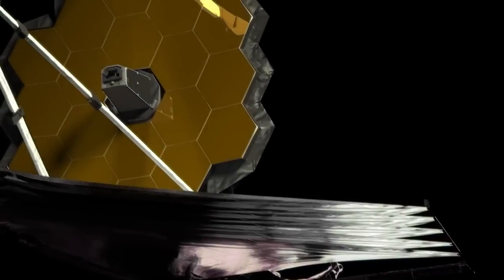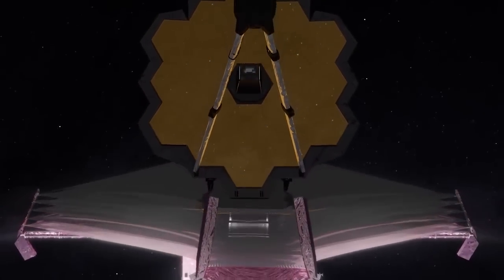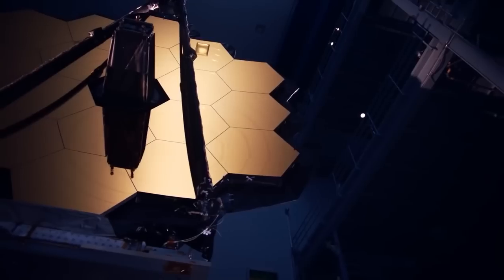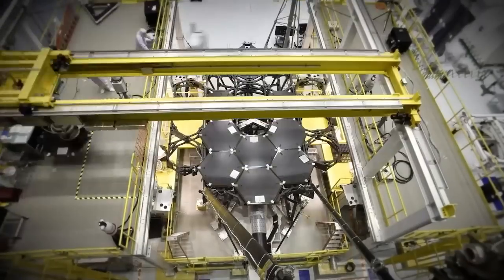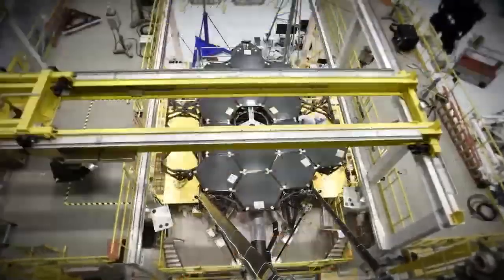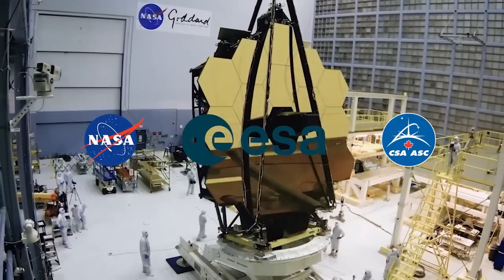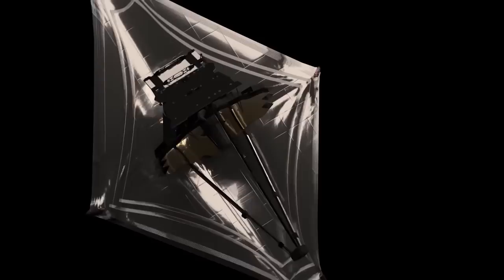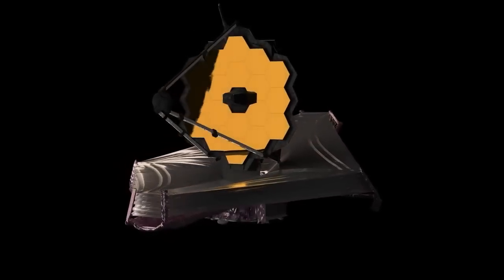Before we jump into the jaw-dropping findings, let's take a moment to appreciate this marvel of engineering and technology. The James Webb Space Telescope didn't just happen overnight. It's the result of years of intense research, mind-bending mathematics, and an international collaboration between NASA, the European Space Agency, and the Canadian Space Agency. The telescope is an intricate ballet of mirrors and sensors that function together in the cold emptiness of space to bring us the most detailed images of the universe that human eyes have ever seen.